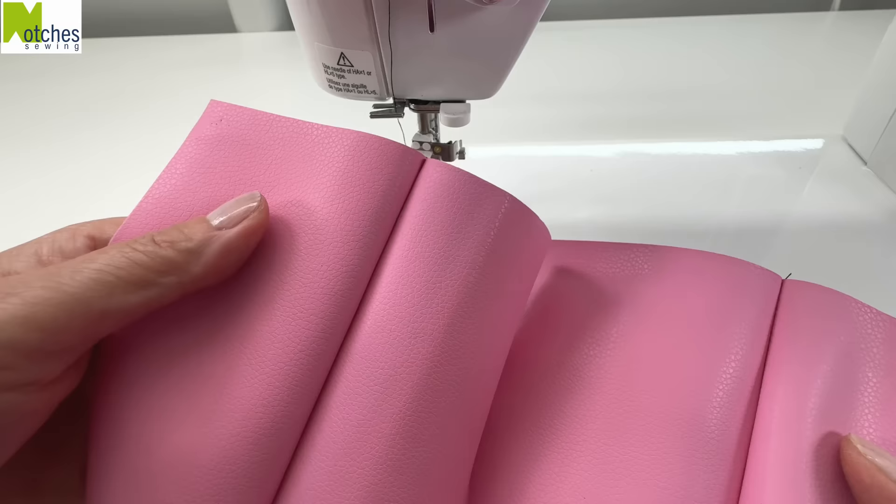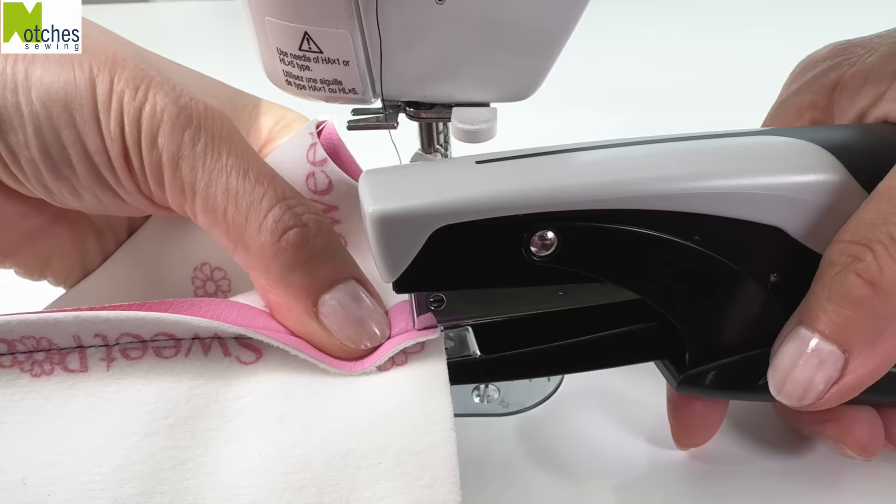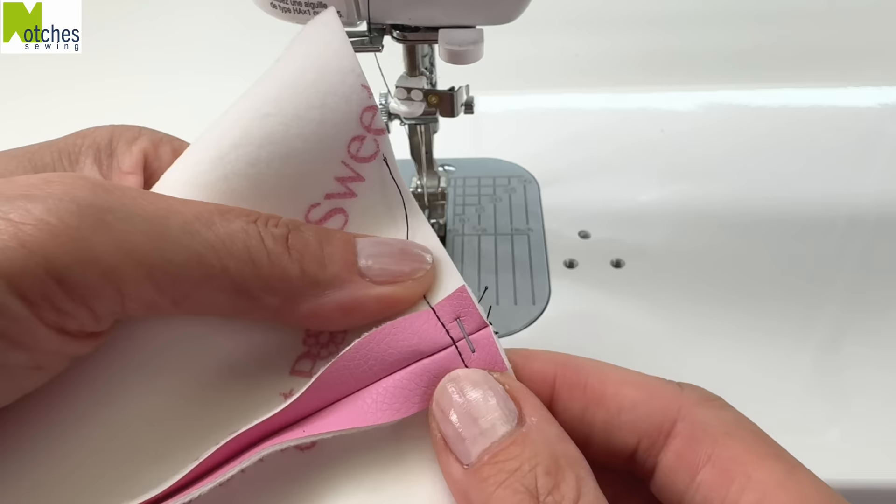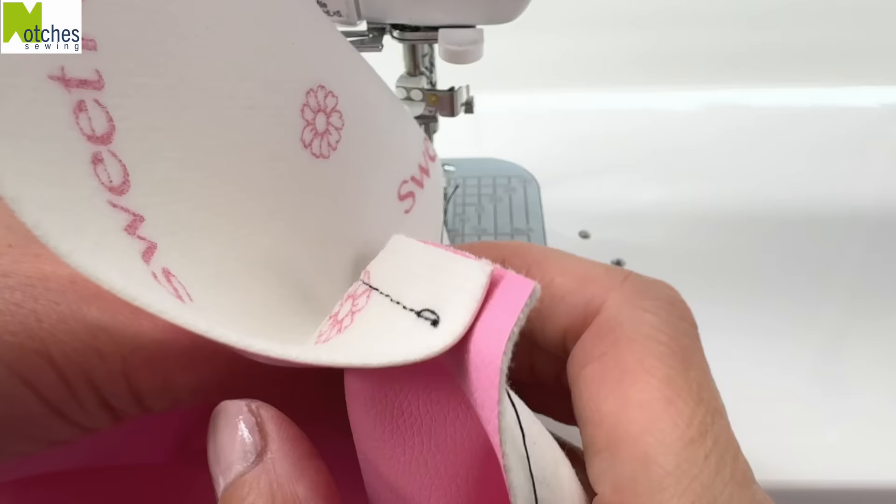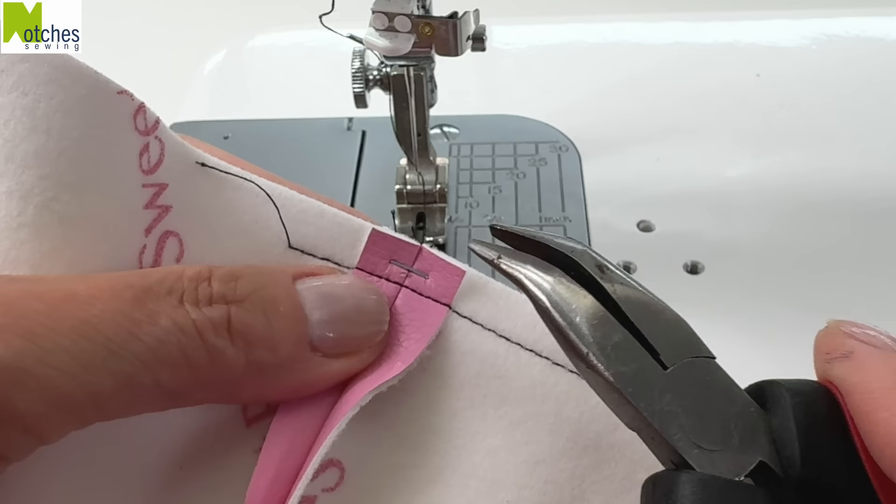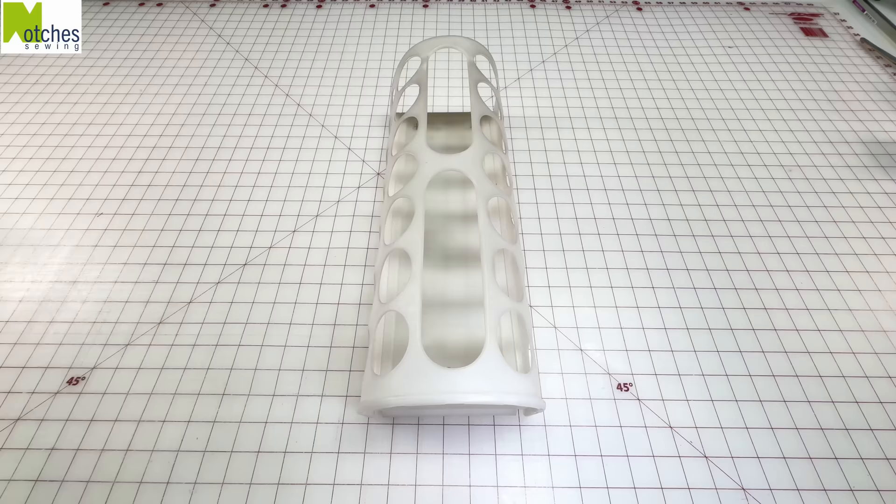This next little hack I saw on a channel called Fierce Kittens. Make sure to check out her channel because she's really awesome. To easily match seams on vinyl, use a handheld plier stapler to staple just inside the seam allowance. You don't have to worry about breaking a needle because the staple is just to the right of the seam. I can easily remove these small staples with my bent nose pliers.